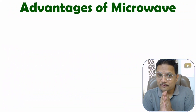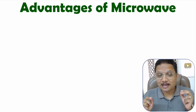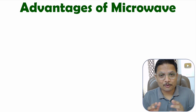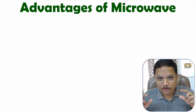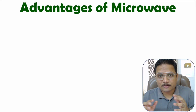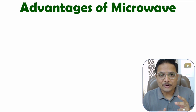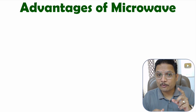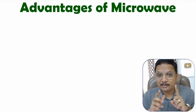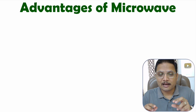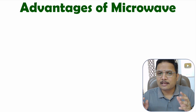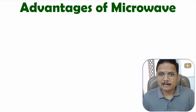Hello friends, welcome to Engineering Panda family. In this video I'll explain the advantages of microwave. In my last video I explained different bands of microwave and applications of microwave, including the microwave frequency range from 1 GHz to 300 GHz. With this frequency range there are many advantages — let me discuss all those advantages one by one.